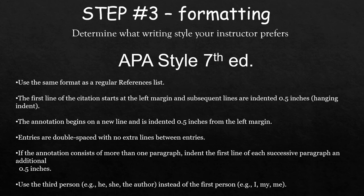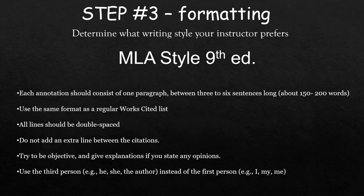Use third person and avoid first person. If you're writing a humanities paper, you're likely using MLA style. Typically, annotations consist of one paragraph that's about 150 to 200 words long. Use the same format that you would use for a works cited list. If you're including opinions in your annotation, be objective, and again, avoid first person.